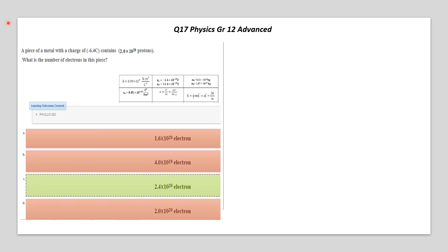And here we are again with question 17. It's too similar to question 16. A piece of metal with a charge of minus 6.4 Coulomb contains 2.0 by 10 to the power of 20 protons. What is the number of electrons in this case?